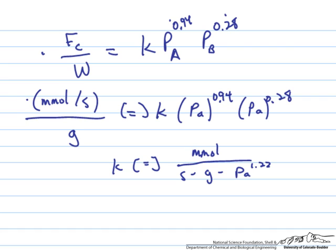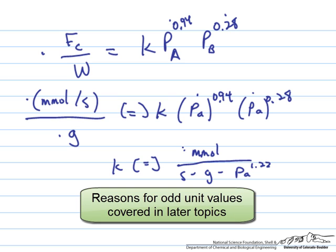These are the units that are reported for the data that we had. So millimoles per second, grams, and pascals. And so if we solve for the units on k, we get millimoles per second per gram per pascal to the 1.22 power, which are admittedly kind of strange units. But again, these sort of fractional order units are not at all unusual in reactions catalyzed by solids.